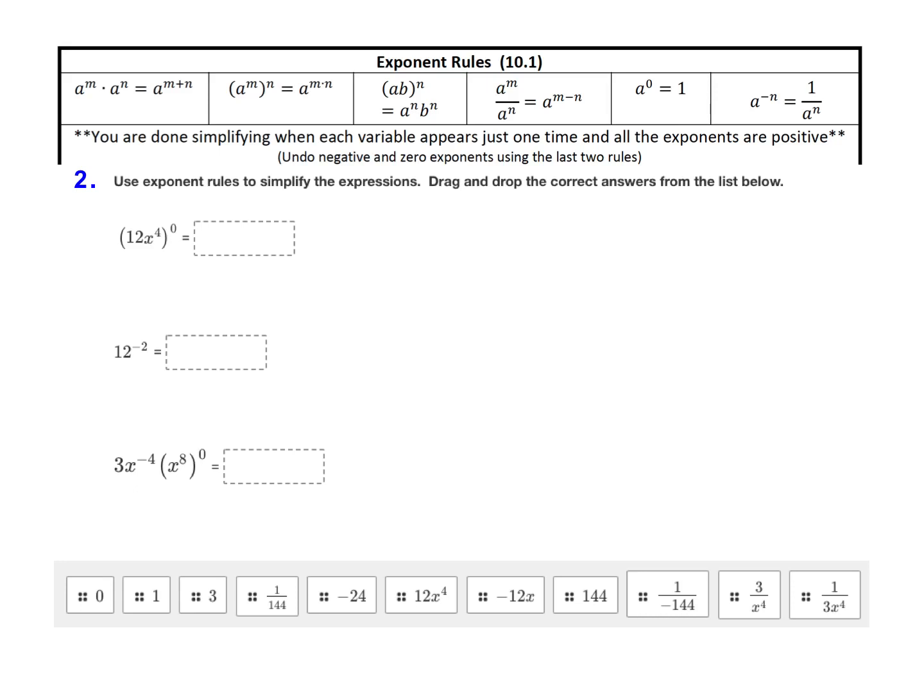Problem number two also uses the exponent rules from lesson 10.1. I've listed the seven exponent rules up here. Remember that you are done simplifying when each variable appears just one time and all the exponents are positive.